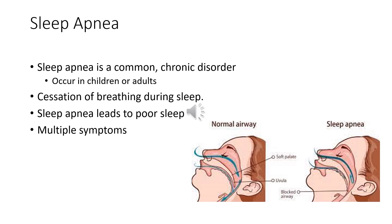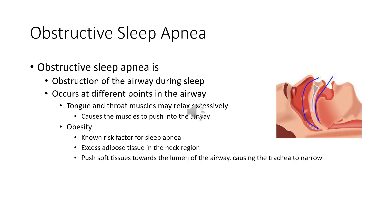As we see in the picture, the normal airway allows air to flow in and out of the respiratory system just fine. But when you have sleep apnea, the airflow is blocked. Obstructive sleep apnea occurs when something is actually blocking the airway during sleep. It can occur at different points in the airway — the tongue or throat muscles may relax too much or excessively, causing the muscles to push on the airway and obstruct airflow.